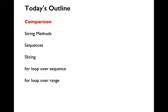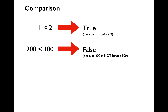Let's get started by learning how to compare strings. We know how to compare numbers. Let's say that we have a boolean expression 1 less than 2. Python is going to evaluate that boolean expression to a boolean value of true, because 1 is indeed less than 2. 200 less than 100 is going to evaluate to false, because 200 is not less than 100.